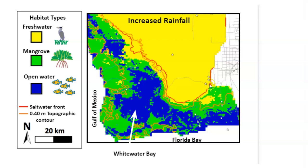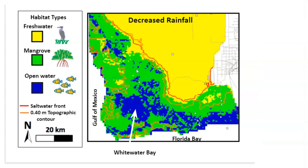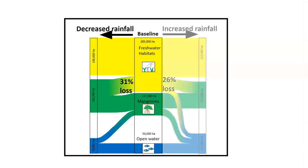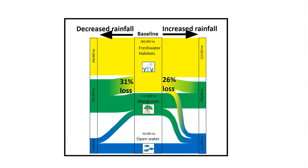Future saltwater intrusion and mangrove encroachment may be driven by topography and canals with little influence by the amount of freshwater flow. This simulation highlights another vulnerability: the increased freshwater flow in the increased rainfall scenario combined with sea level rise to vastly expand the amount of open water. So a certain amount of loss of freshwater marsh may be baked in with sea level rise, the main question being what it is converted to. Conversion of freshwater marsh to mangroves would be preferable to open water, especially as we don't know whether seagrass beds would succeed along with the open water.